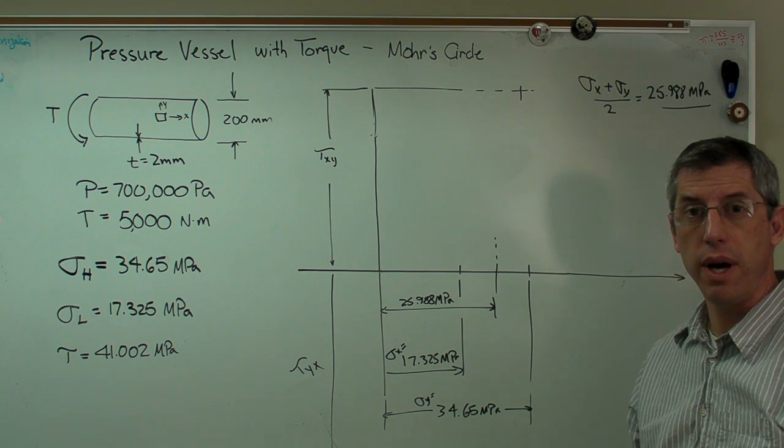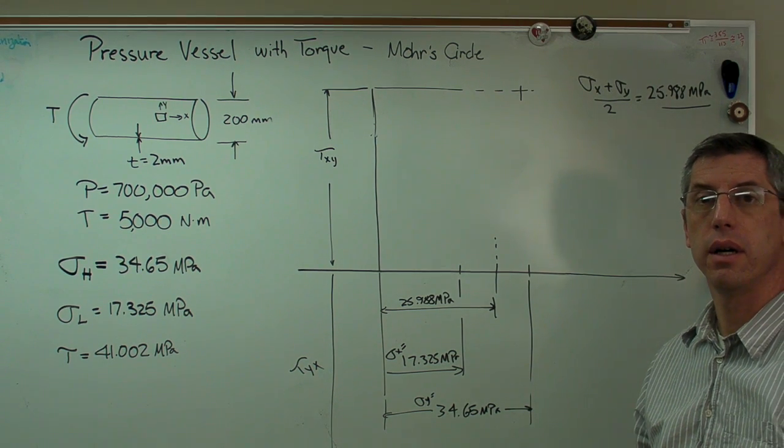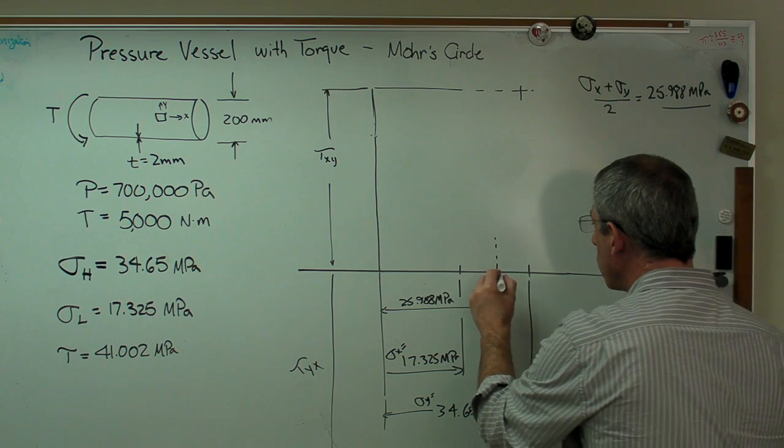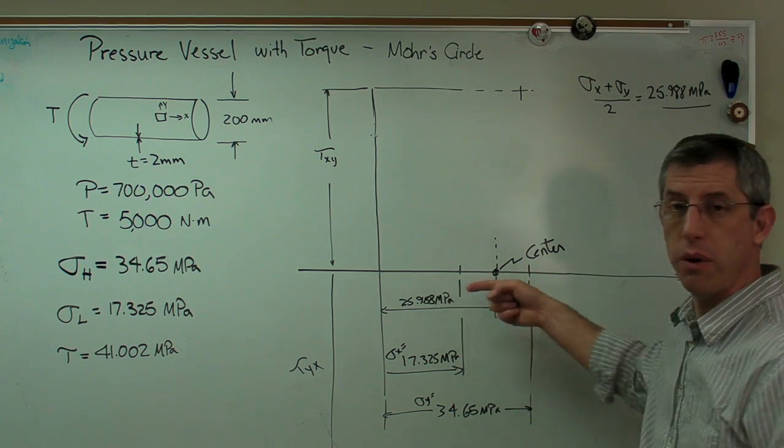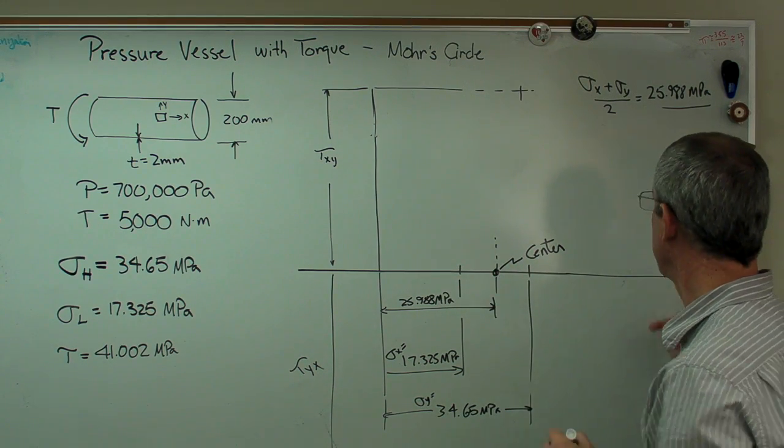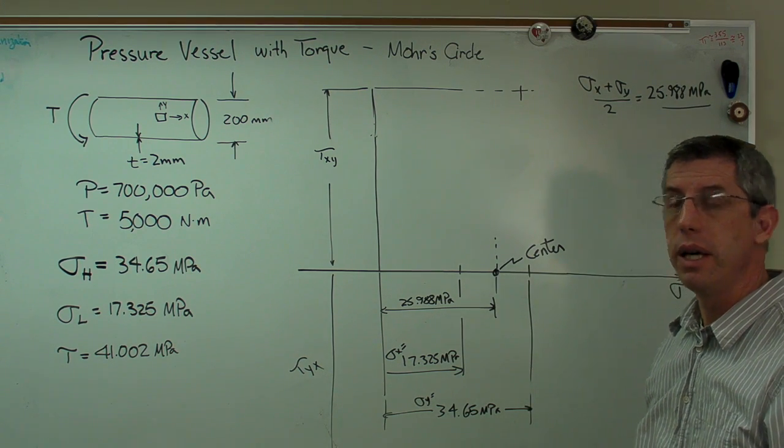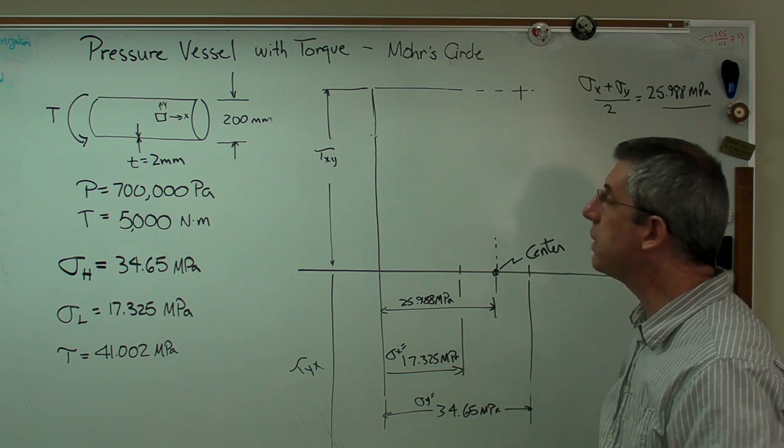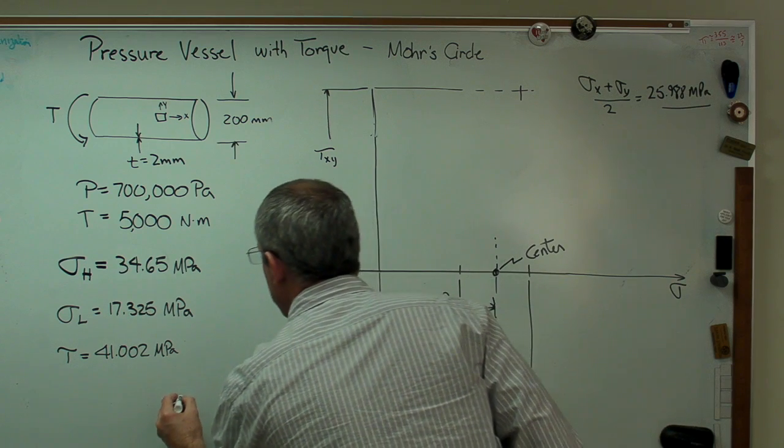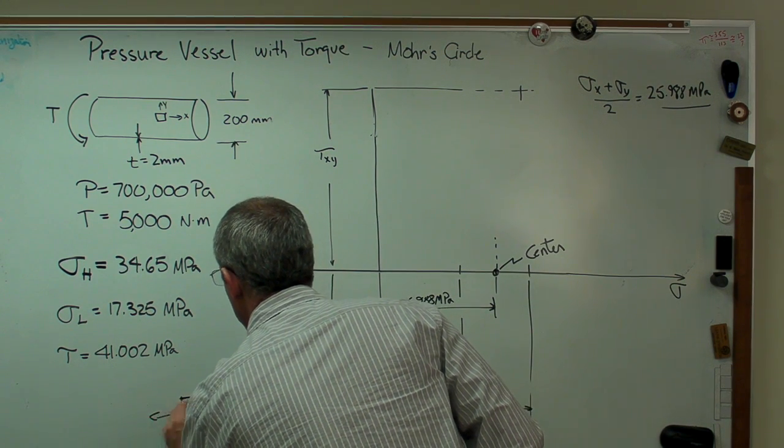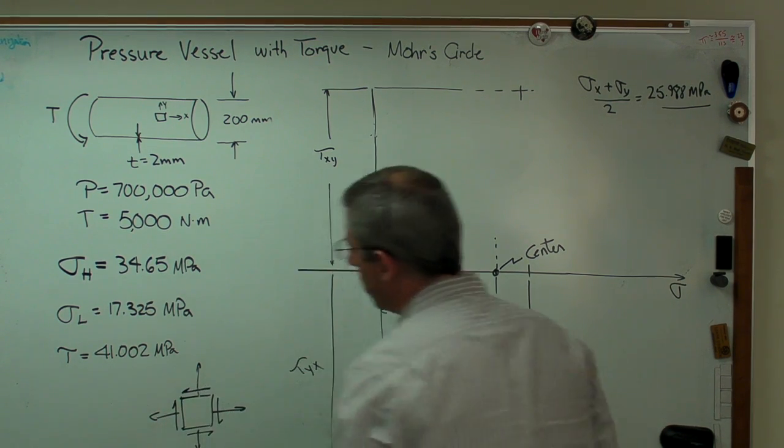So I've got everything I need to know now on my graph, and it's time now to start drawing a circle out of this. So I know the circle's going to be centered right there. The circle's always centered on the sigma axis, never off the axis. All we're really trying to do with Mohr's circle is figure out where the center has to be and what the radius is. So there's the center. Now, I need to find, let me draw my stress element over here again. Here's my stress element.